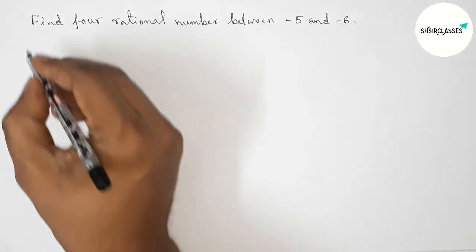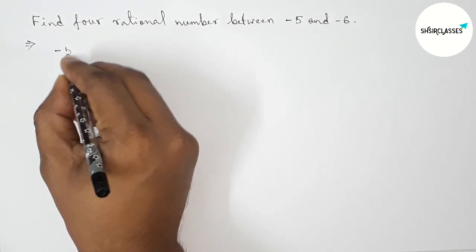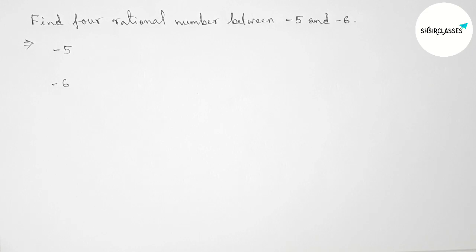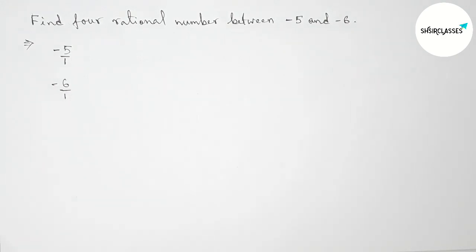First of all, let us solve this problem. So here given two negative numbers minus 5 and minus 6. Okay, so next we can write minus 5 as minus 5 by 1 and minus 6 by 1.